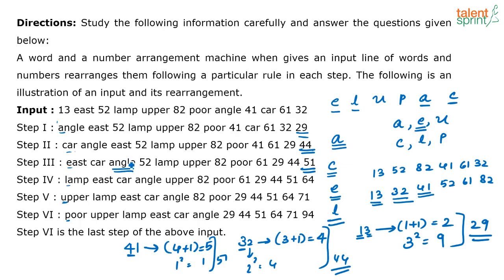In the third step, again the word starting with a vowel coming next alphabetically — already 'angle' was taken, so next is 'east'. Then again the word starting with a consonant next in alphabetical order — next after 'car' is 'lamp'. So the pattern for words is: vowel, consonant, vowel, consonant, vowel, consonant in alphabetical order. For numbers: take them in ascending order, apply tens digit plus 1 and units digit squared to each.